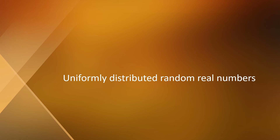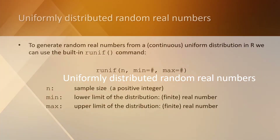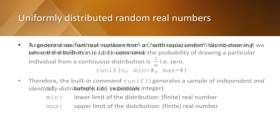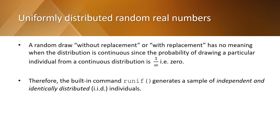How to generate uniformly distributed random real numbers? To generate random real numbers from a uniform distribution in R, we can use the built-in runif command and add the required information. N is the sample size, min is the minimum value of the population, and max is the maximum value of the population. A random draw without or with replacement has no meaning when the distribution is continuous, since the probability of drawing a particular individual is 1 over infinity, which means 0. Therefore, runif generates a sample of independent and identically distributed individuals.